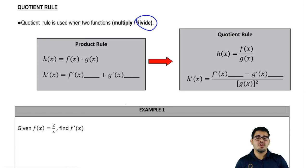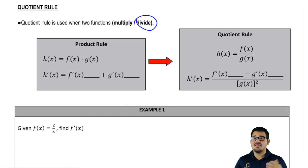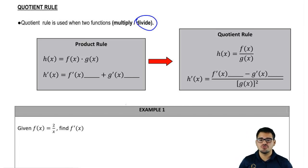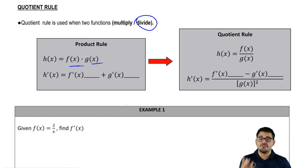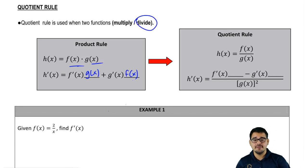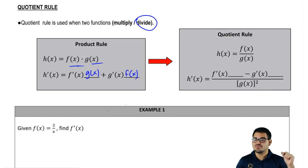Now we're actually going to refer back to the product rule to get to the quotient rule. The better that you learn your product rule, the easier it is to learn and remember your quotient rule. So going back to the product rule: when we have two functions f and g multiplying, the derivative is the derivative of the first times the second, plus the derivative of the second times the first.